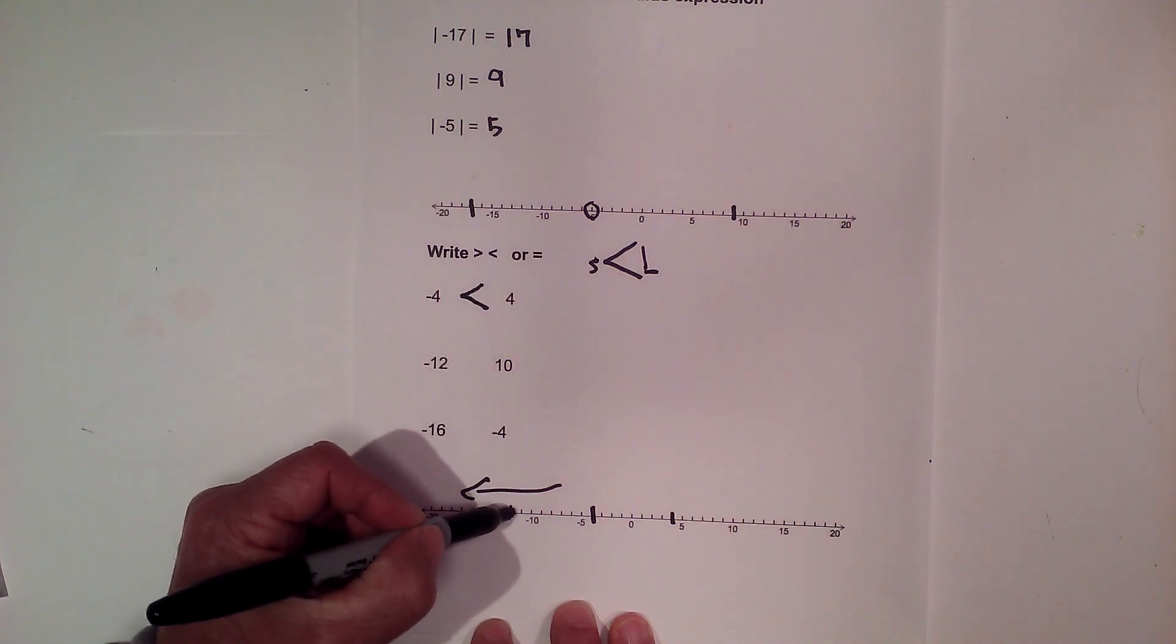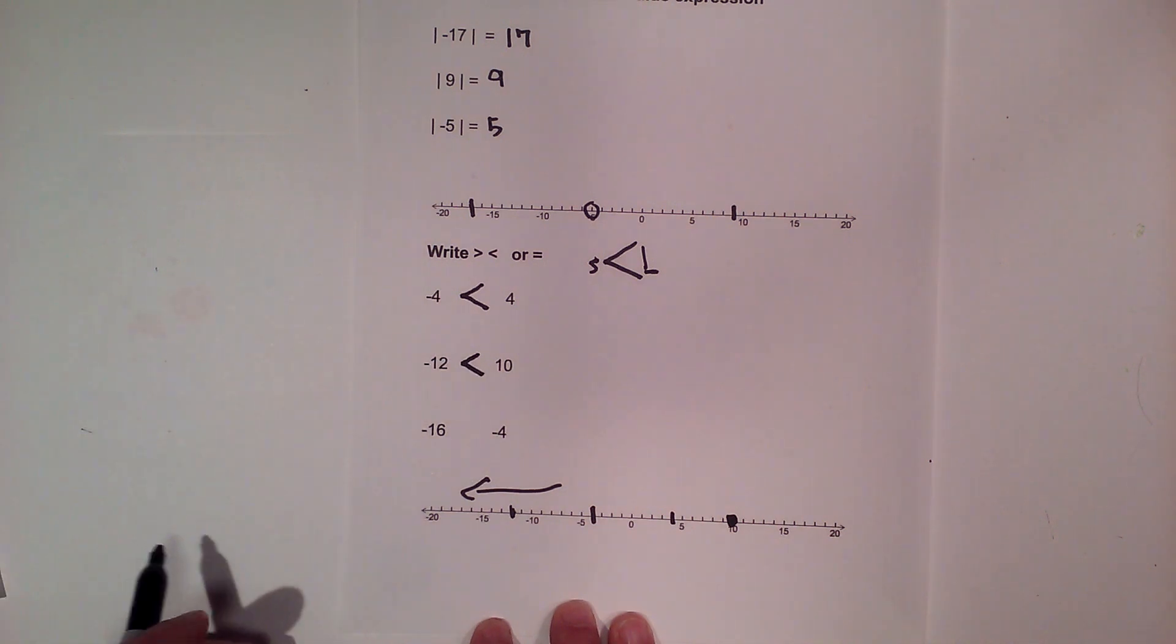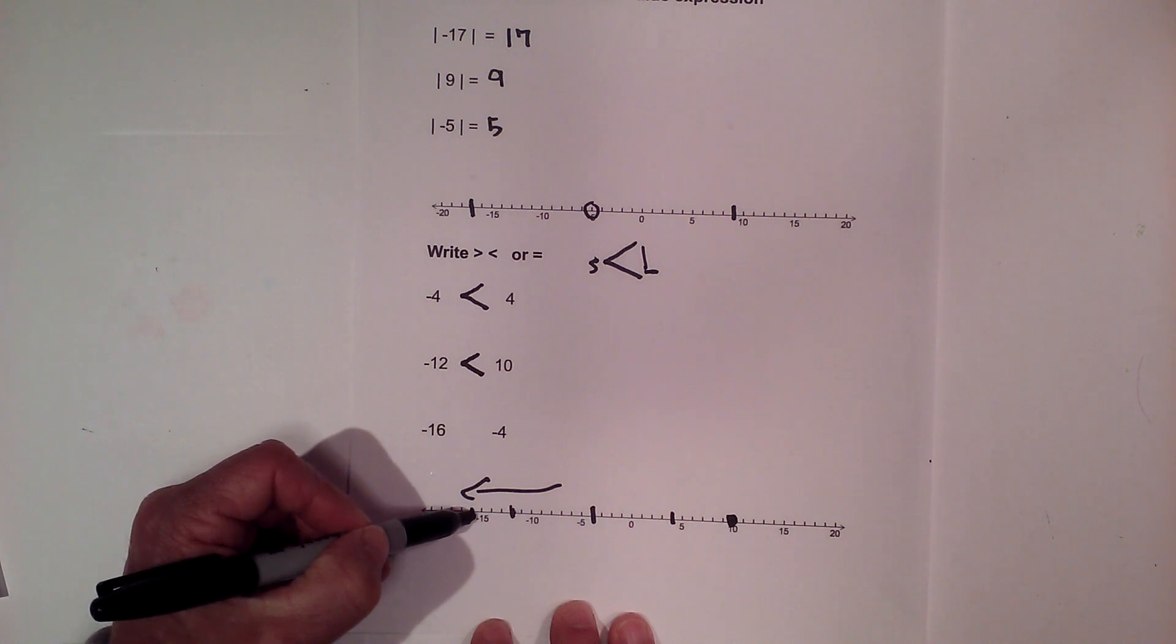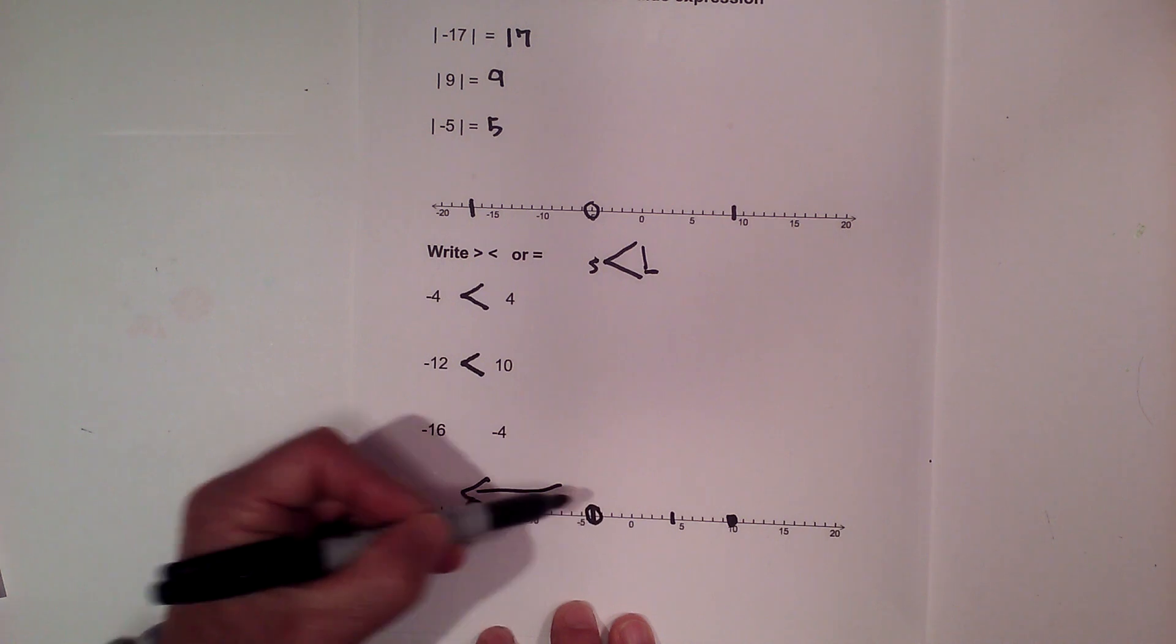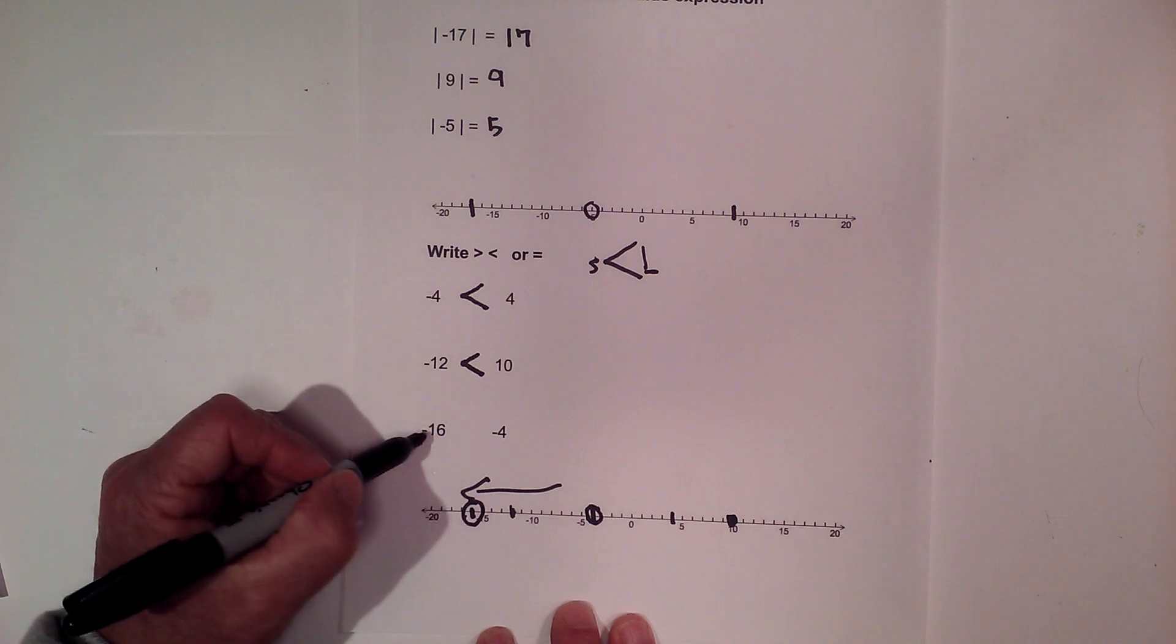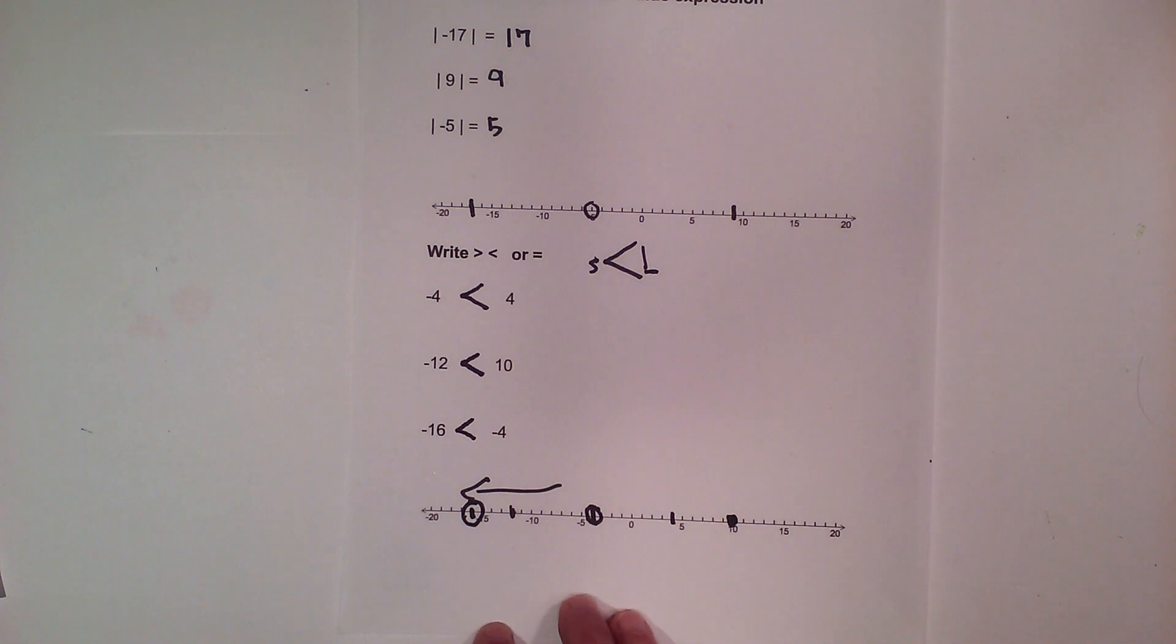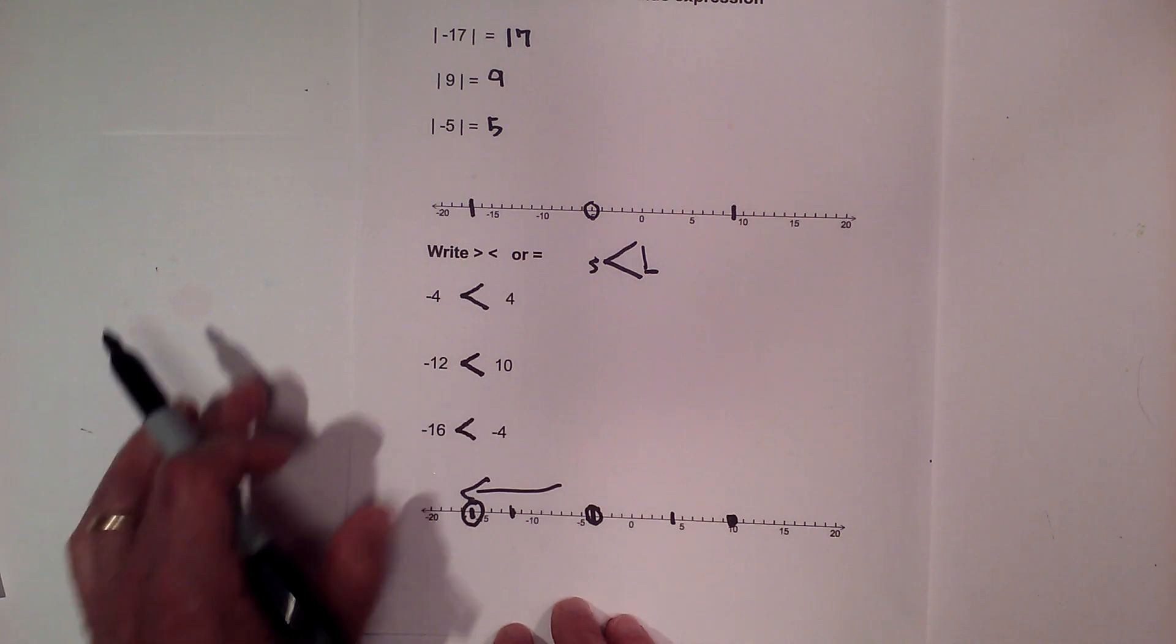Negative 12, which is right here. 10 is here. So it's to the left of 10, so again, negative 12 is smaller than 10. Now negative 16 is here. Negative 4 is here. So, negative 16 is to the left of negative 4. Although you would think 16 is bigger than 4, but it's not, it is actually less than. Again, the sign is pointing towards the larger side is the larger number.